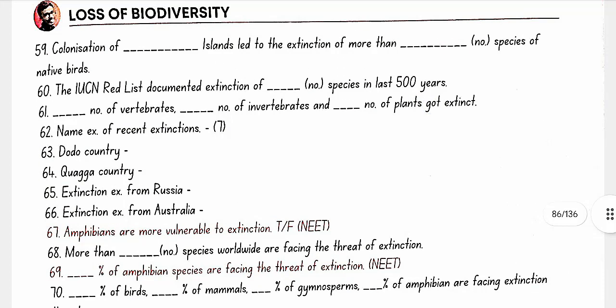Loss of Biodiversity: Colonization of tropical Pacific islands led to the extinction of more than 2,000 species of native birds. The IUCN Red List documented extinction of 784 species in the last 500 years: 338 vertebrates, 359 invertebrates, and 87 plants.